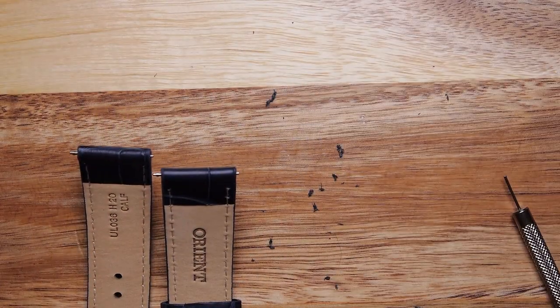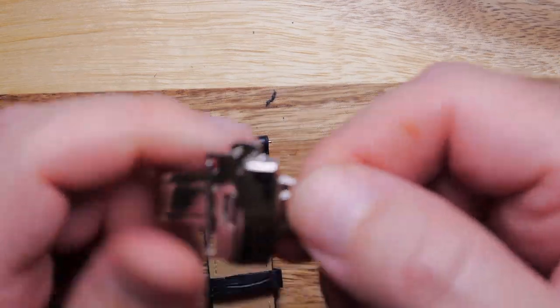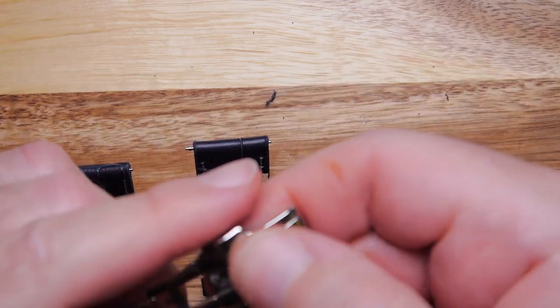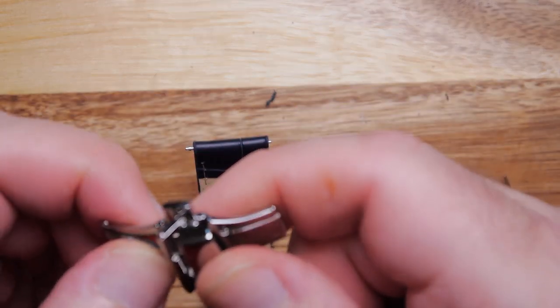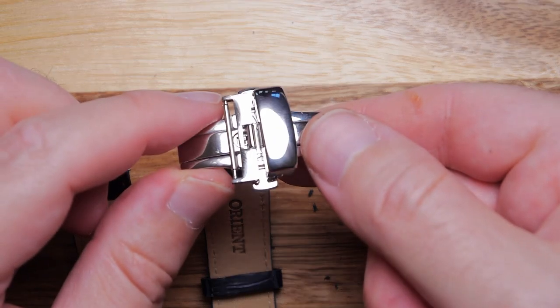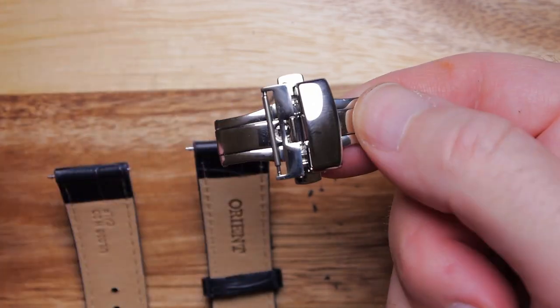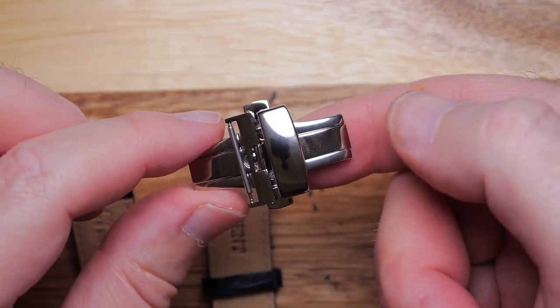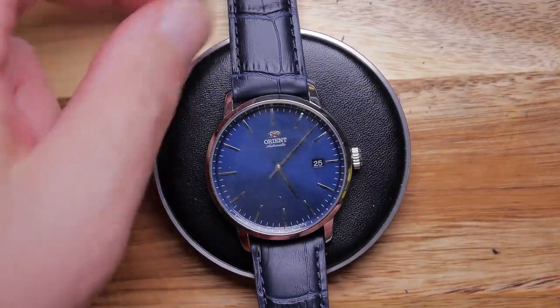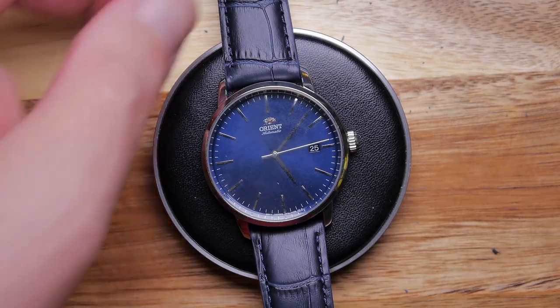And then we're going to change the clasp. Because I'm not really a fan of buckles. I like clasps. We're going to try this 20 some dollar one from Watch Gecko first. I'm not a huge fan of butterflies. I like single sided. But they are twice as expensive. And putting a 40 or 50 dollar clasp on a 120 dollar watch doesn't make too much sense to me. But I'm willing to spend 20 something. We'll give that a shot.